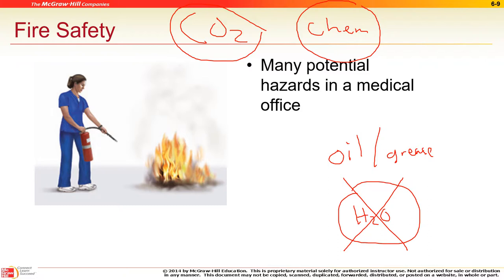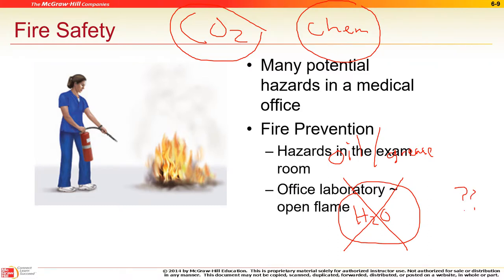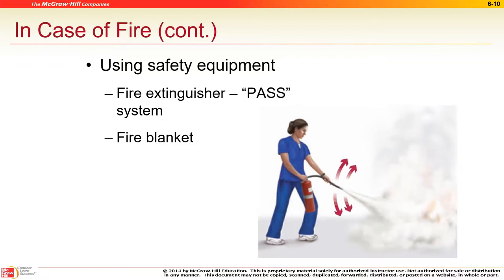When there's a fire, use the PASS method with the extinguisher. P — pull the pin. A — aim. S — squeeze the handle. S — sweep. You want to aim at the base of the fire, not the top or middle.